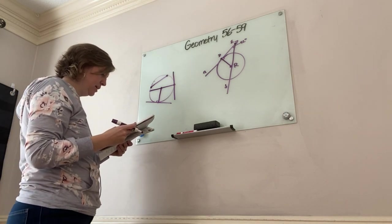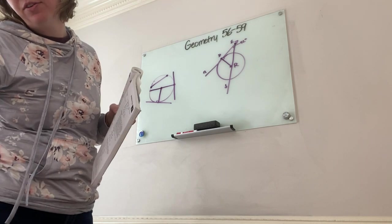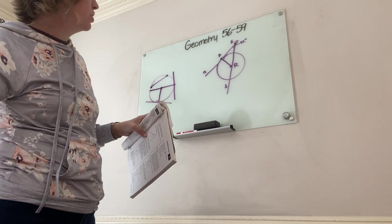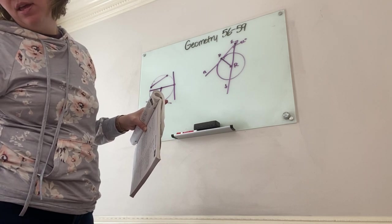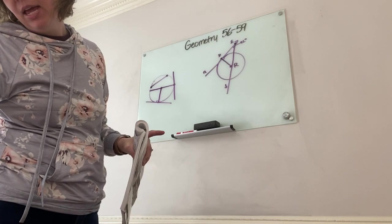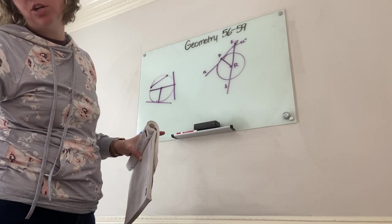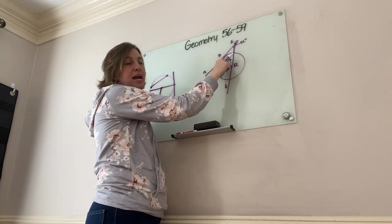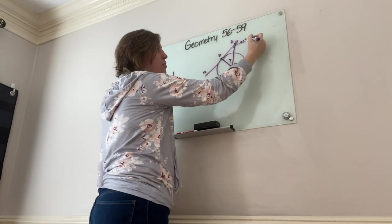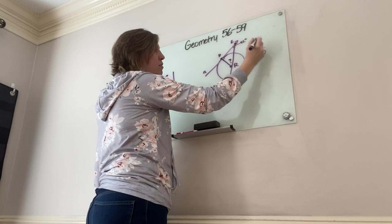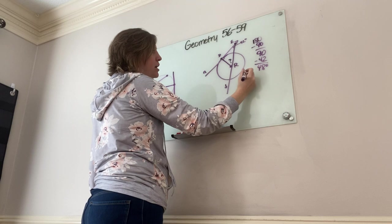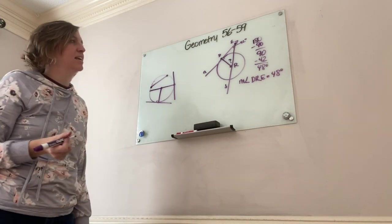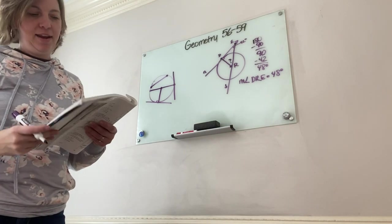Since the three angles must sum to 180°, and 90° + 42° = 132°, we get angle DRE = 180° − 132° = 48°. So the measure of angle DRE equals 48 degrees. It takes a few minutes to break it all down, but that's all they're asking.